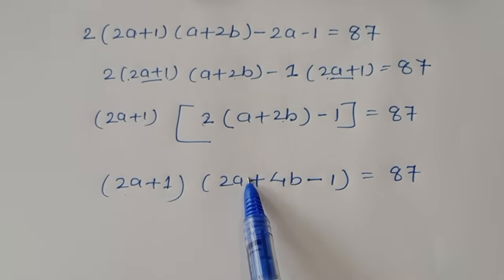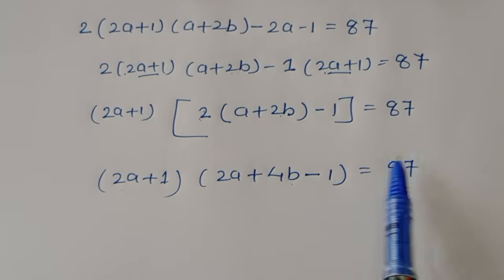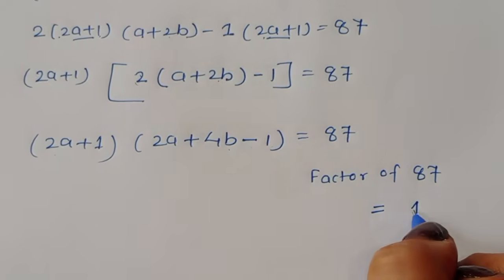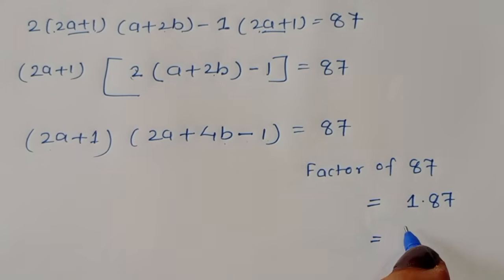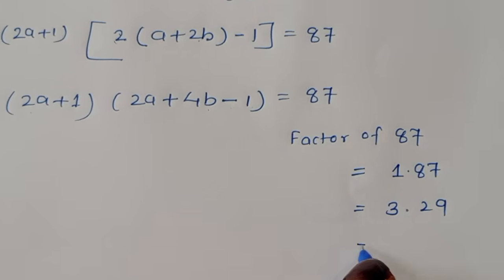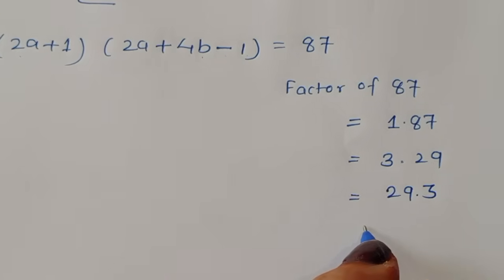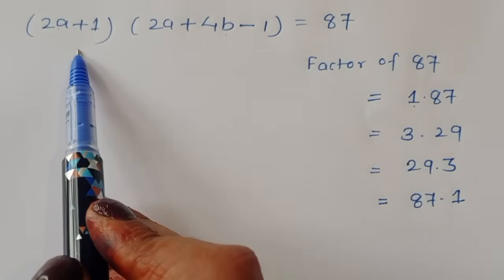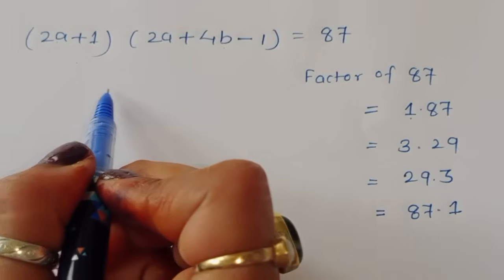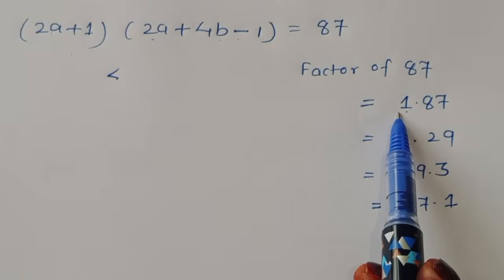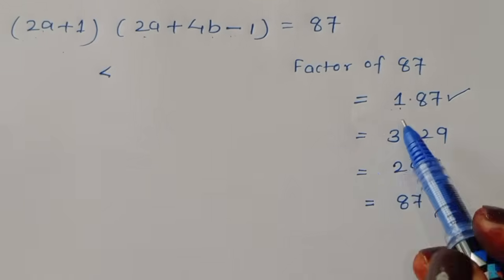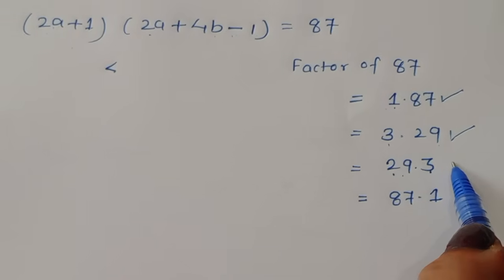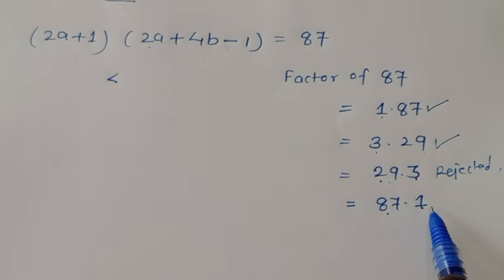The factors of 87 are: 1 × 87, 3 × 29, 29 × 3, and 87 × 1. The condition is that (2a + 1) < (2a + 4b − 1). So 29 × 3 is rejected since 29 > 3, and 87 × 1 is also rejected since 87 > 1. We are left with two valid cases: 1 × 87 and 3 × 29.